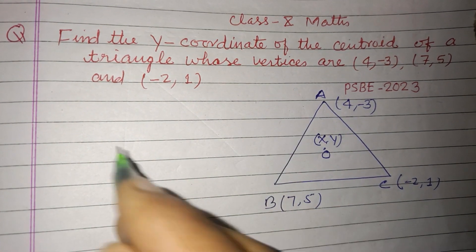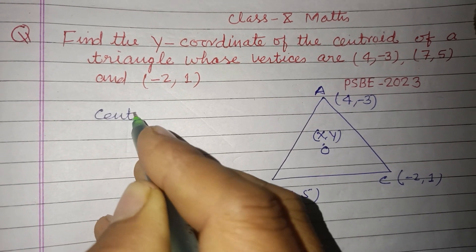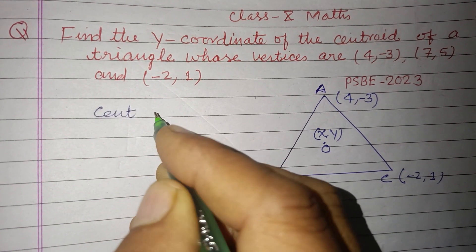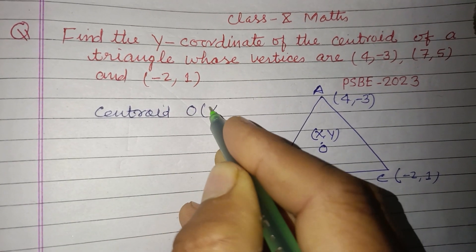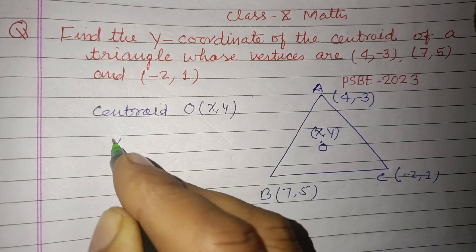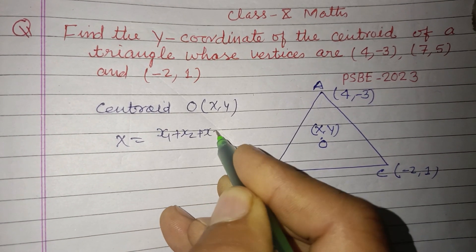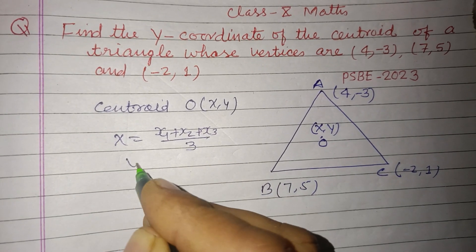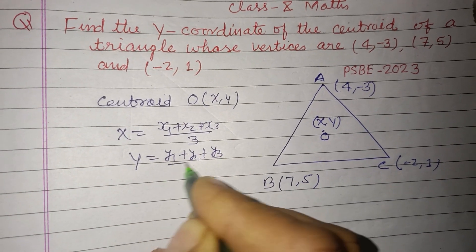We need the y-coordinate. The centroid O has coordinates (x, y) where x = (x₁ + x₂ + x₃)/3 and y = (y₁ + y₂ + y₃)/3.